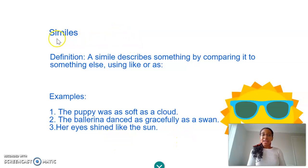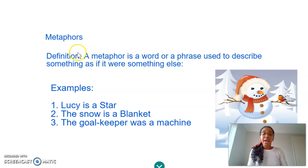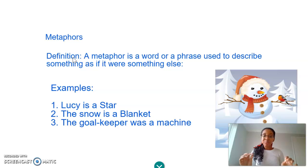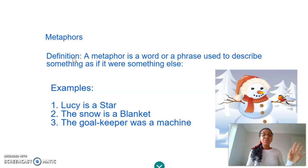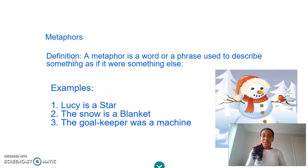So that is a simile. Now something that's very similar to a simile is a metaphor. Metaphors also describe something by comparing it to something else, but the main difference between a simile and a metaphor is that with a metaphor, you are describing something as if it were something else. So there's no use of those two keywords 'as' or 'like' — you're simply saying that something is something else. Let's look at some examples. The first example is: Lucy is a star.